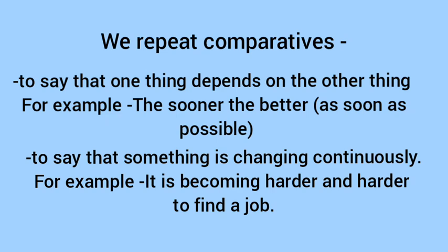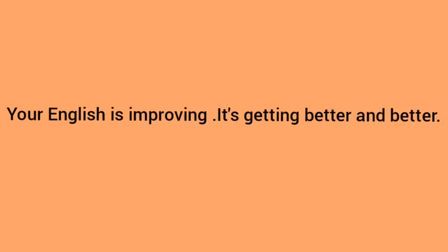For example: 'It is becoming harder and harder to find a job.' Jab aap kehna chahte ho ki koi cheez lagaataar change ho rahi hai — continuously ka meaning hota hai lagaataar. Is sentence ka meaning hai ki job milna bahut zyada mushkil hota ja raha hai. Aur ek aur example: 'Your English is improving, it's getting better and better.' Aapki English improve ho rahi hai, better aur better hoti ja rahi hai — yaani pehle se aur acchi hoti ja rahi hai. Yahaan par do comparative degrees ko humne use kiya hai.